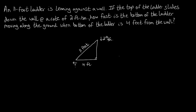In this video we're going to look at a problem involving related rates. We have a word problem: an 11-foot ladder is leaning against a wall. If the top of the ladder slides down the wall at a rate of 2 feet per second, how fast is the bottom of the ladder moving along the ground when the bottom of the ladder is exactly 4 feet from the wall?